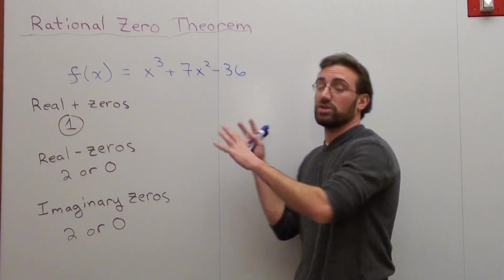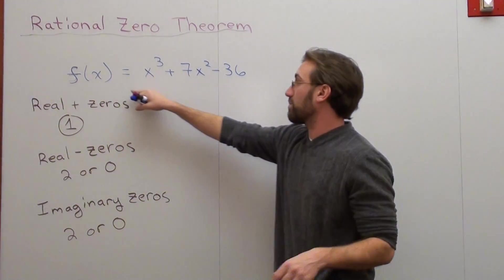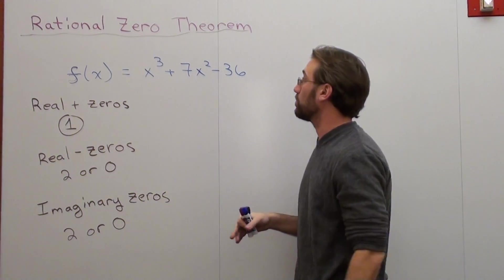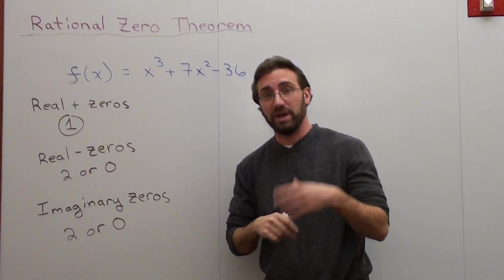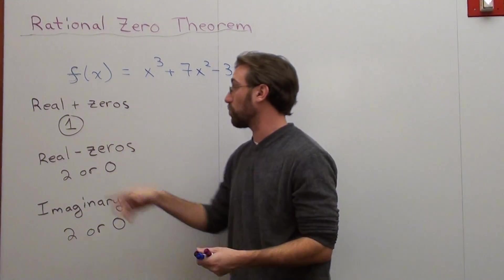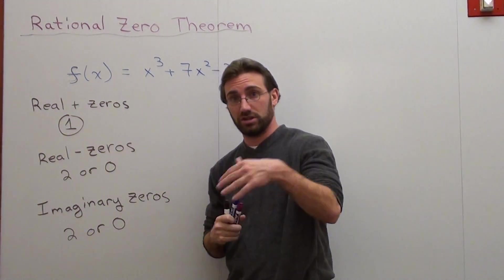Hello again, we're doing the Rational Zero Theorem and it's the same exact problem: f(x) equals x cubed plus 7x squared minus 36. Basically what we had determined was that there's one real positive zero using Descartes' rule of signs.